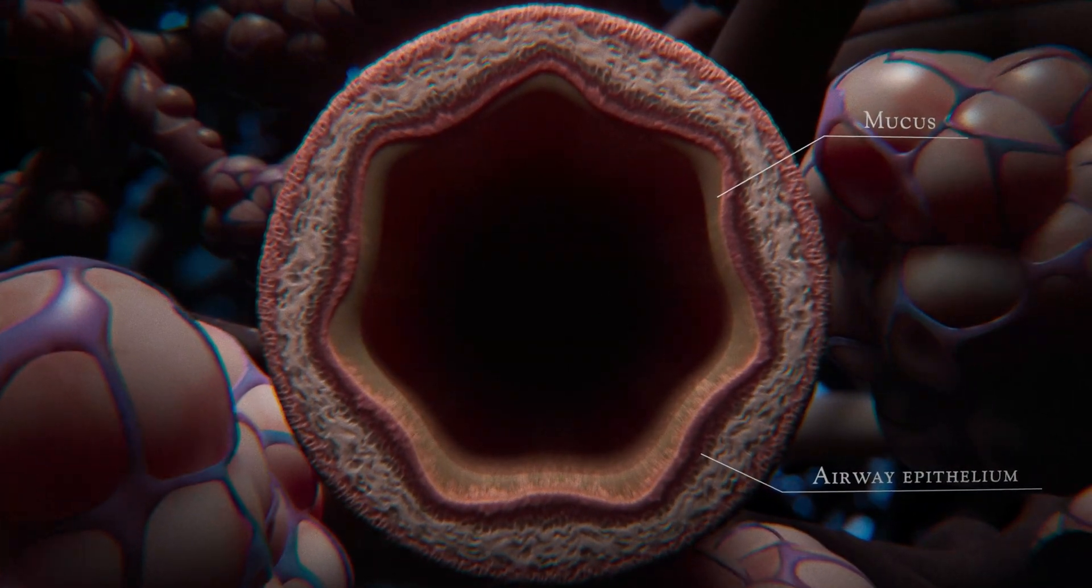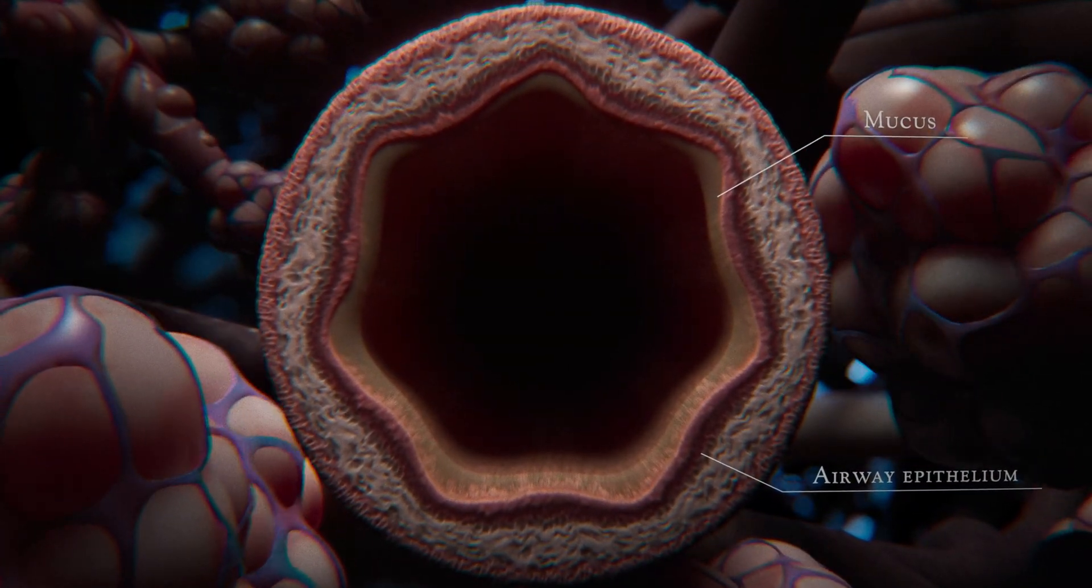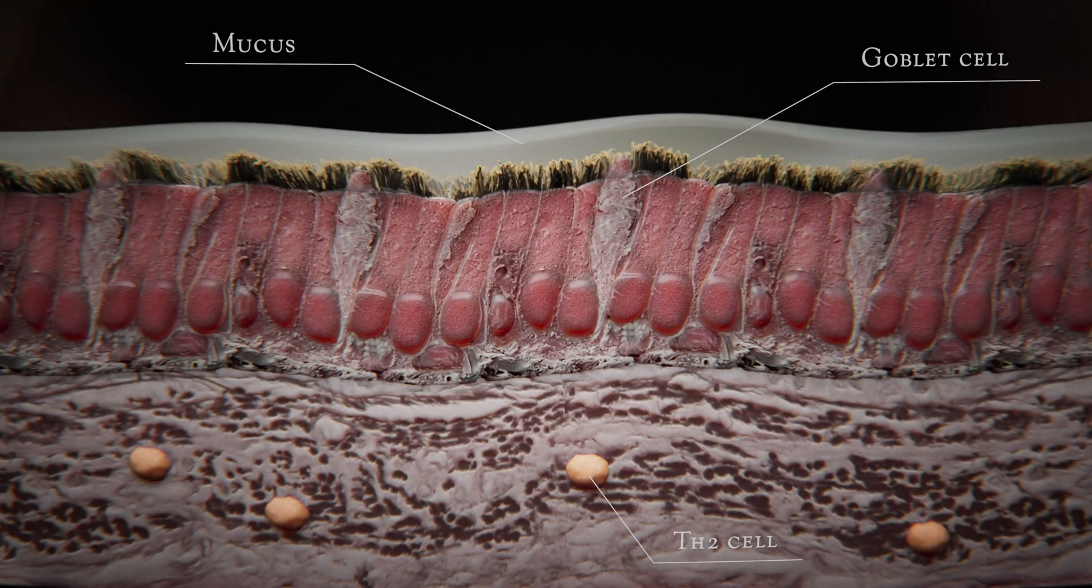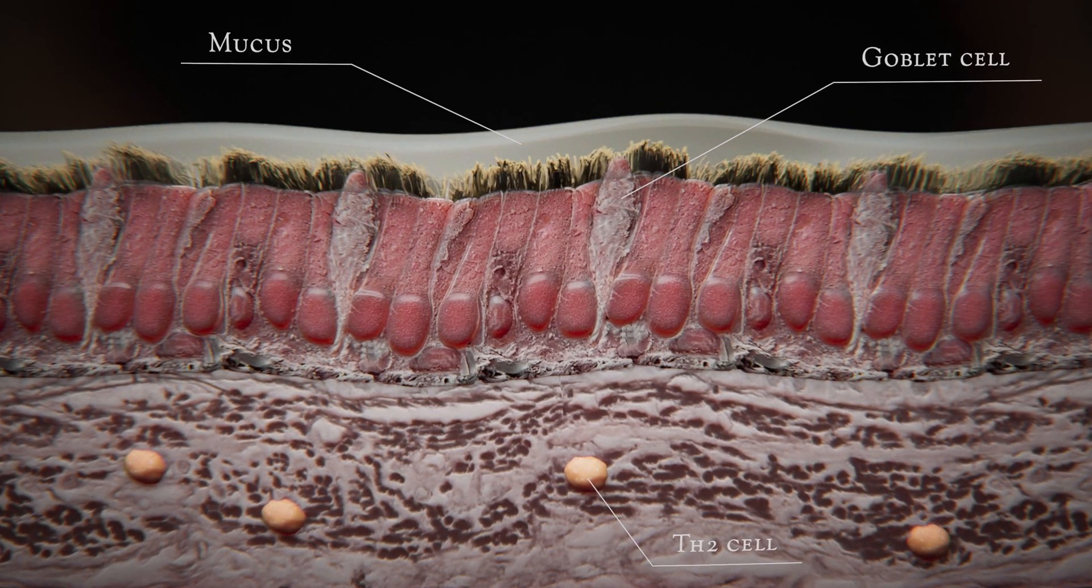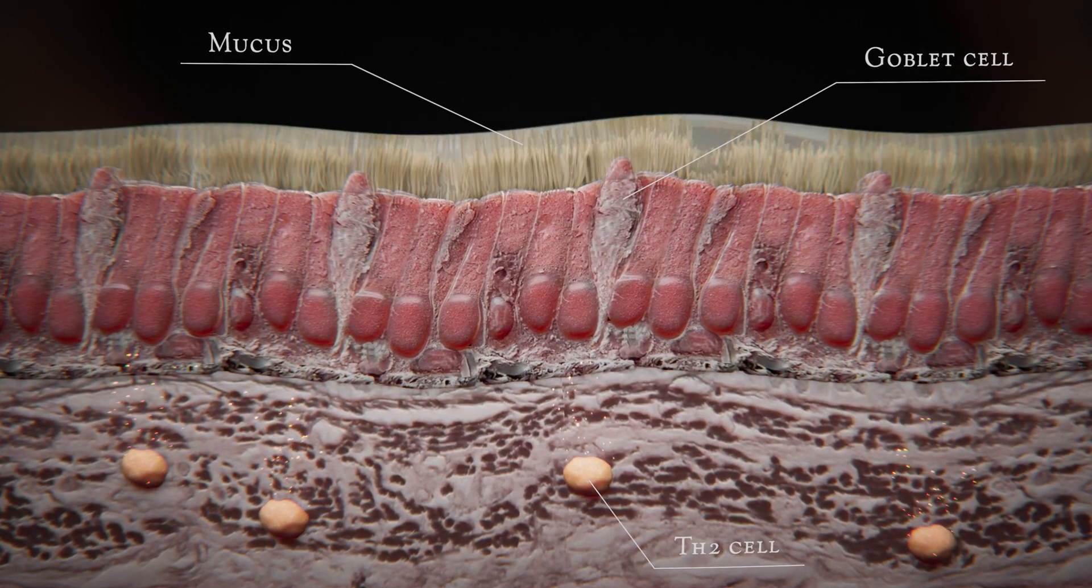For example, take the cells lining the airways. In patients with asthma, these so-called epithelial cells produce a different type of mucus and more of it. This makes it difficult to breathe.